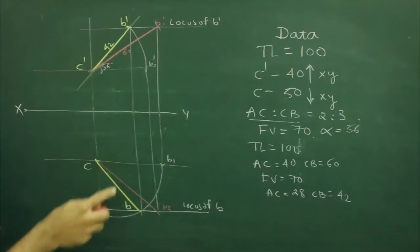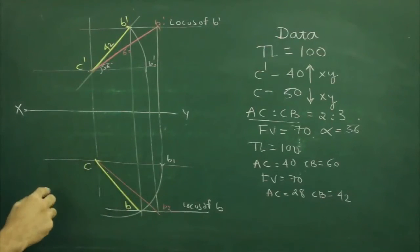We got front view and top view of the line CB. Now we need to draw the remaining parts.